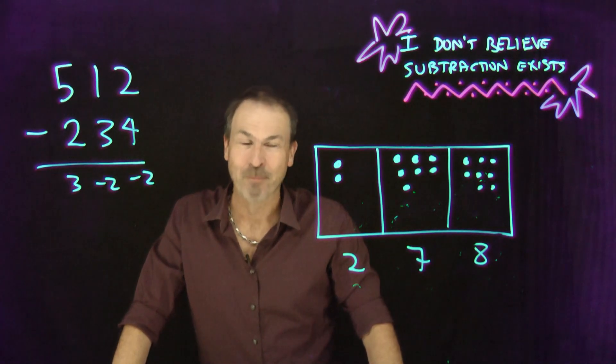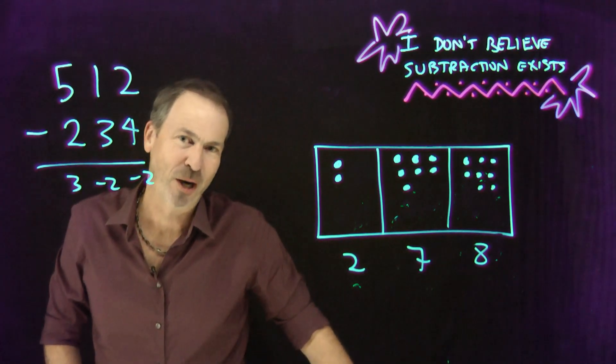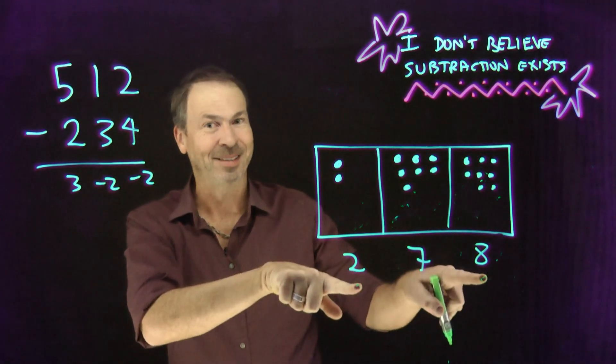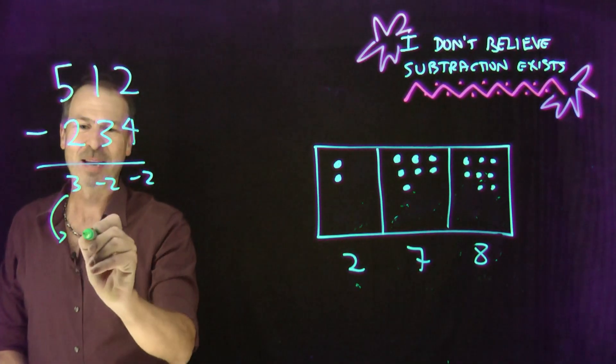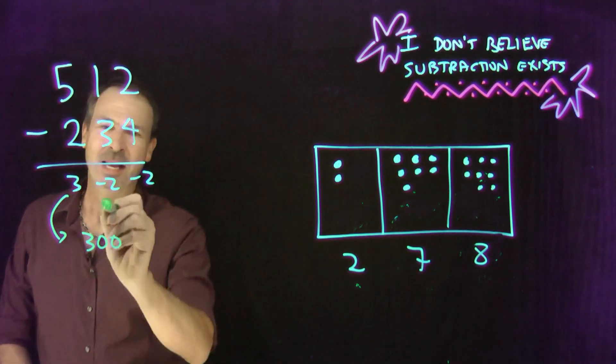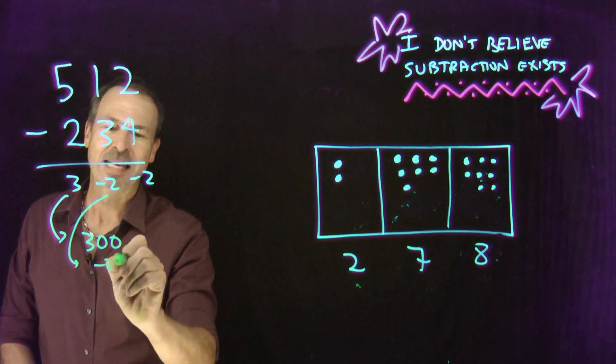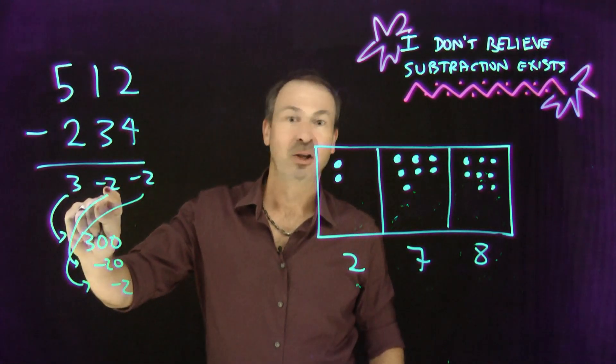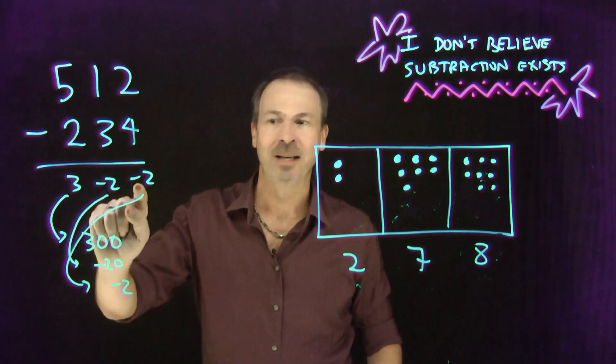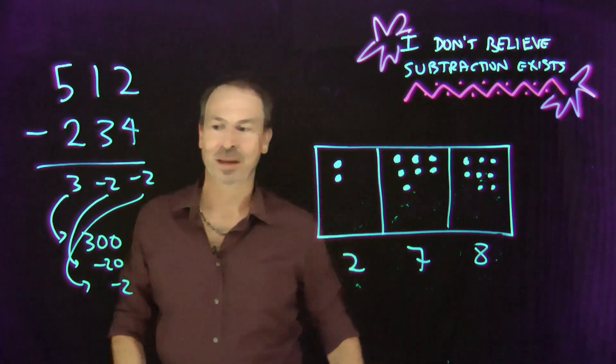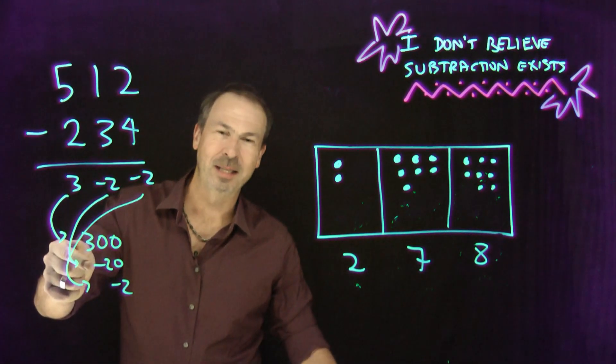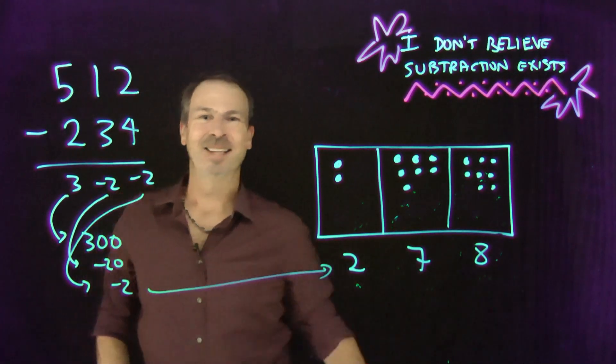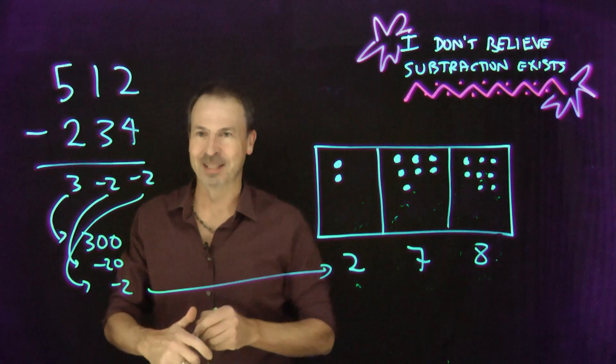By the way, I do actually like my left to right approach here, the answer 300 negative 2t negative 2, because I can see the answer 278. Look at this. That 3 is really 300. That negative 2 there is really negative 20. That negative 2 there is really negative 2. Three actual hundreds, two anti-tens, negative 20, two anti-ones, negative 2. 300 take away 20 is 280. Take away another 2 is 278. It's all beautifully consistent.